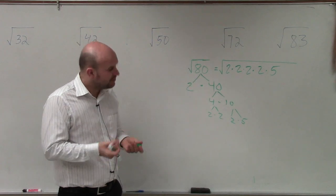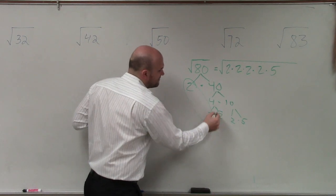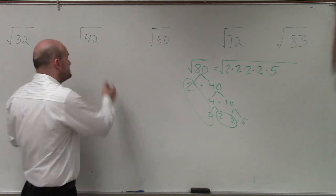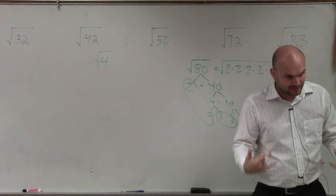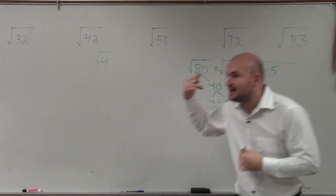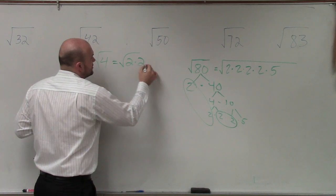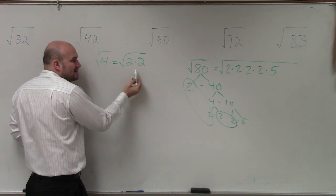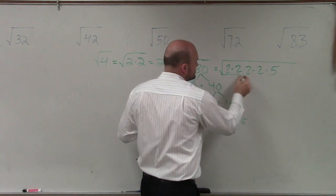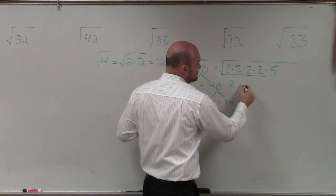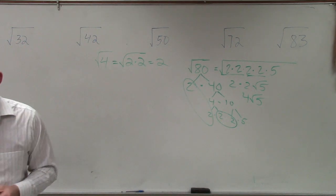The reason why we like to do prime factorization is because when we group pairs together, we can take the square root of that. For instance, the square root of 4 is 2 — meaning what number multiplied by itself gives you 4? It's 2, because the square root of 2 times 2 is 2. So the square root of any pair is just equal to that number. You have two sets of pairs: square root of 2 times 2 is 2, and square root of 2 times 2 is 2. We can't take the square root of 5, so we leave that inside. So the final answer is 4 times the square root of 5.